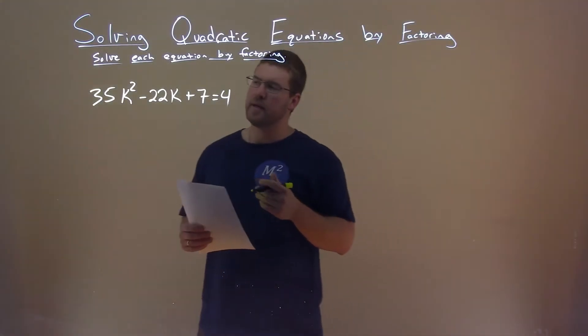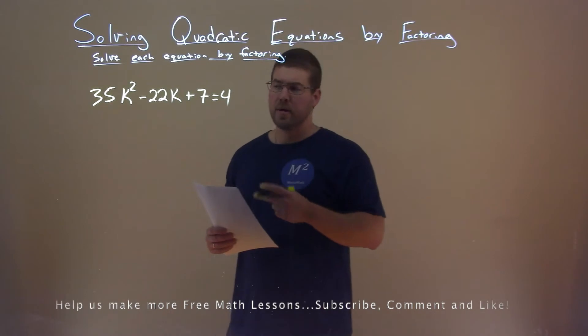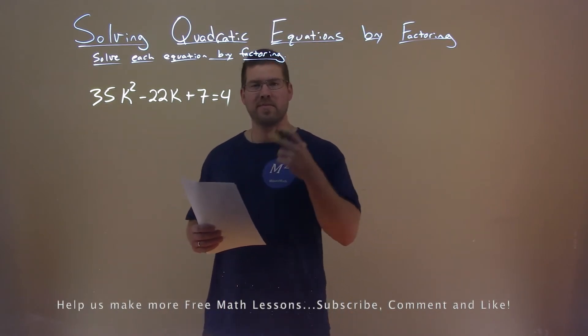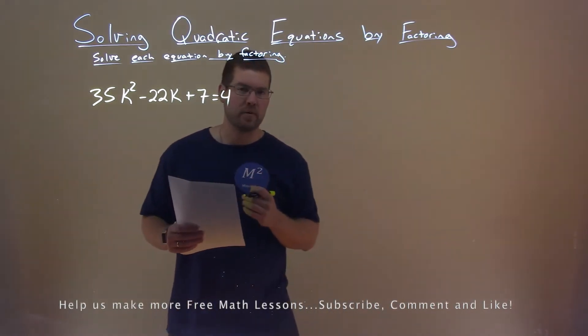We're given this problem right here: 35k squared minus 22k plus 7 equals 4, and we want to solve this by factoring.